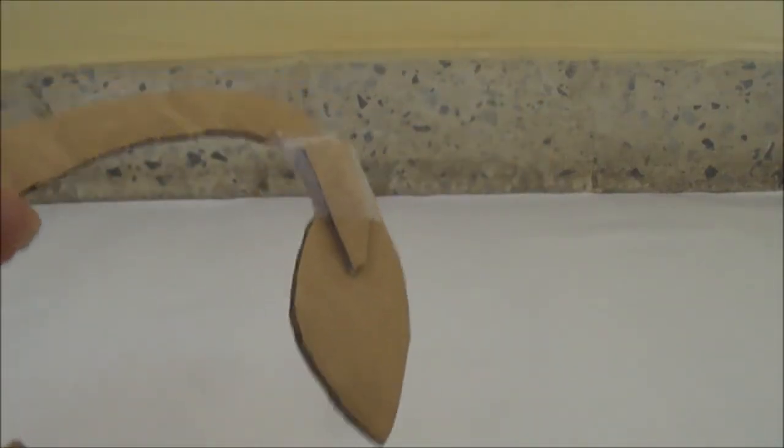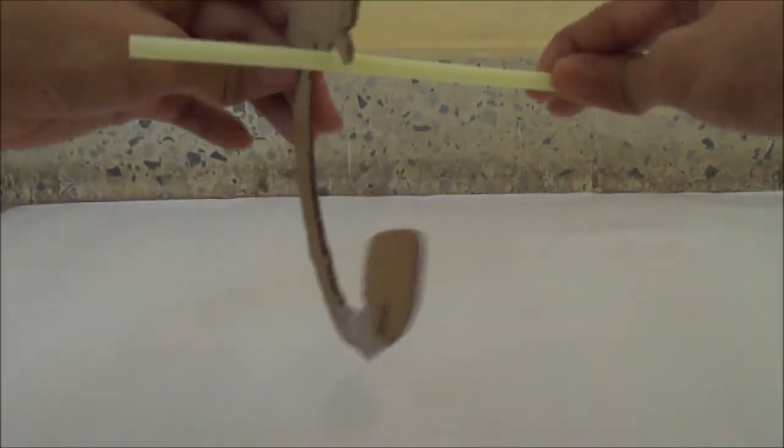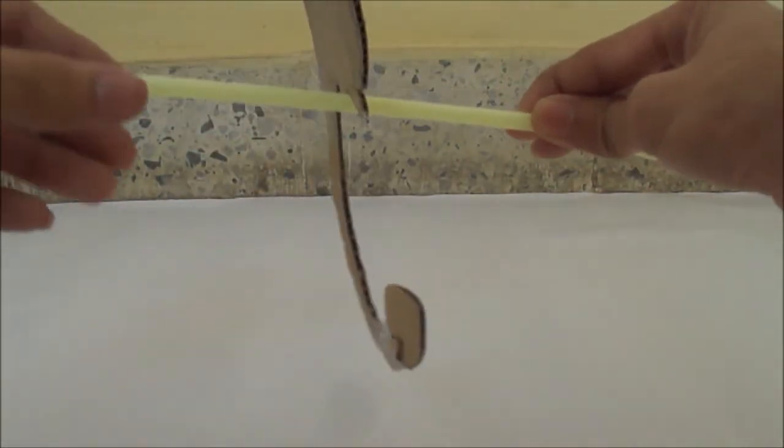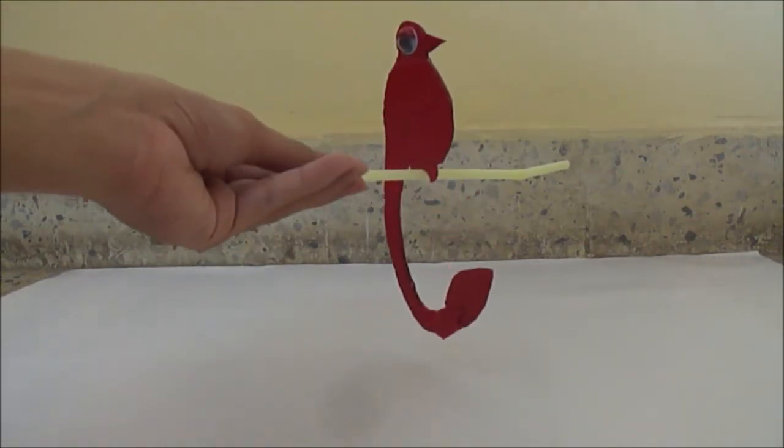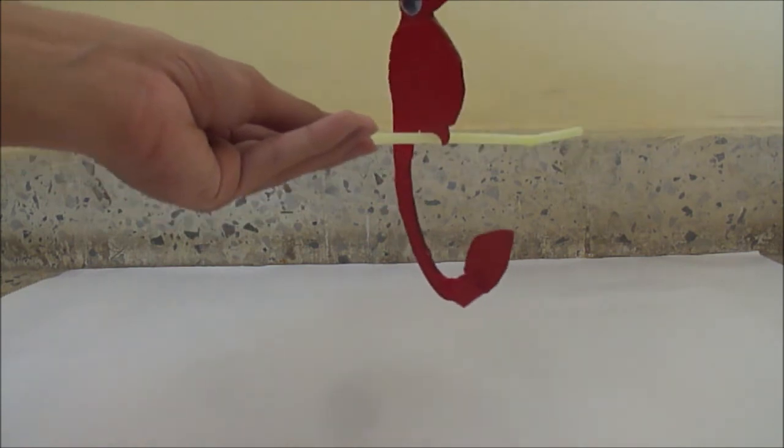After it is balancing itself, color the bird in the color of your choice and stick the toy eyes on the head. Now, put the bird anywhere on a stick or on a straw and see it balancing itself.